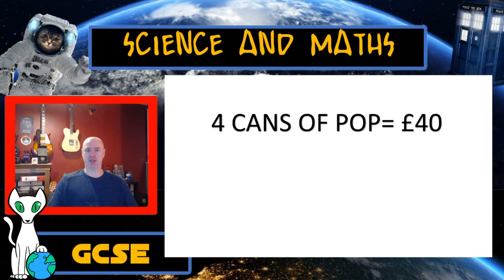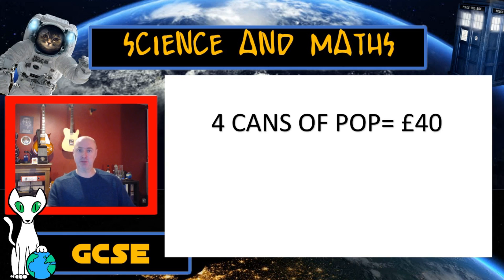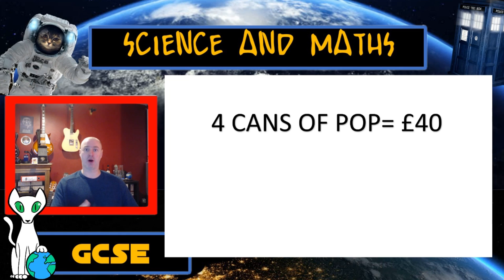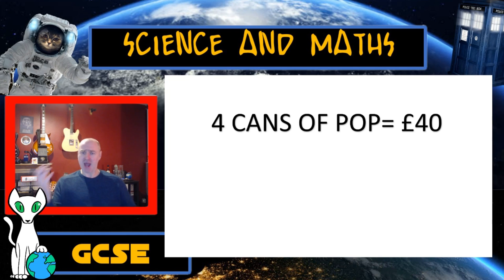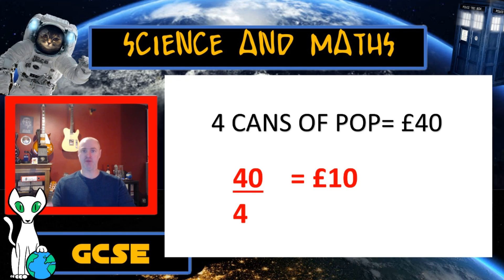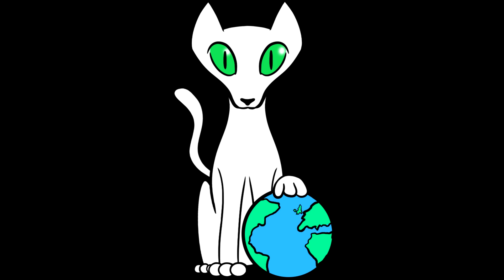A lot of people look at simultaneous equations and see them as being a lot more difficult than they are, but the truth is, if you can solve this problem that's on the screen right now, you will have no issue with simultaneous equations. Four cans of pop equals £40. Everybody watching will know that if four cans of pop equals £40, then one can of pop must equal £10. How have you done that calculation? You've taken the £40 and divided it by the four cans of pop, and you've got £10. If you can do that, you honestly can do simultaneous equations. And you'll find out that the answer is seven. Shut up.